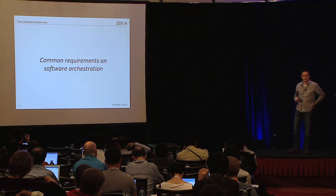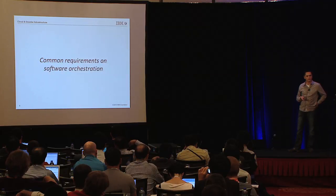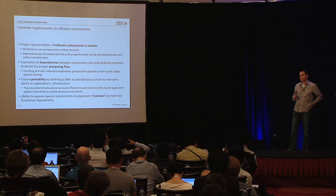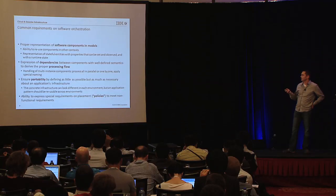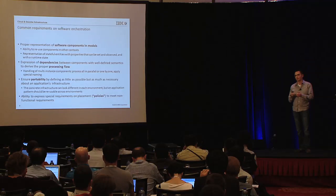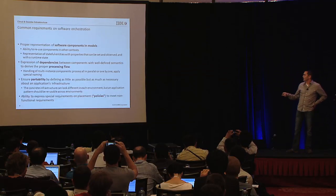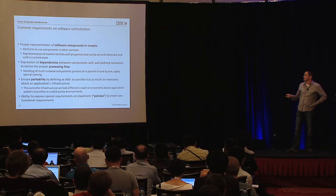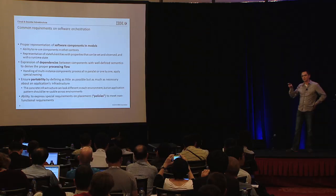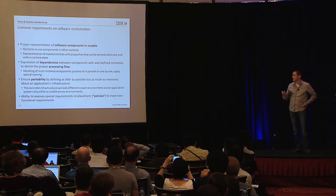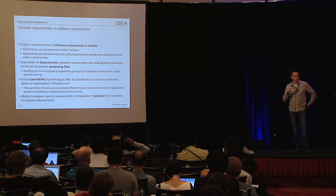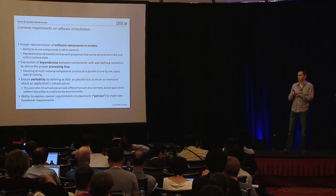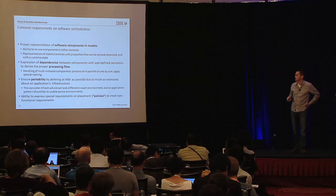Based on those examples, here are the key requirements. Most importantly, we need clear modeling of software components for reusability. We want software components as stateful entities so the orchestrator knows when one is up and running before starting the next. We need dependencies with clear semantics to derive the processing flow. For multi-instance components like cluster members in WebSphere, there may be special constraints — for example, nodes cannot be joined to a cluster in parallel because they depend on updates of cluster-wide configuration data, so it must be done one by one.